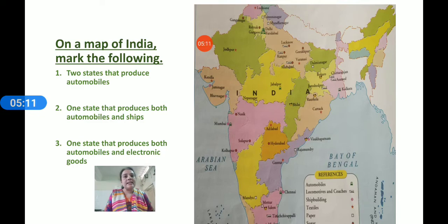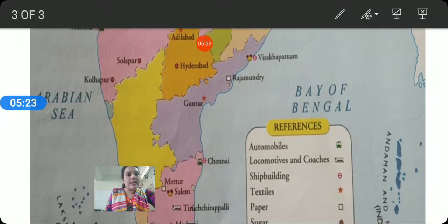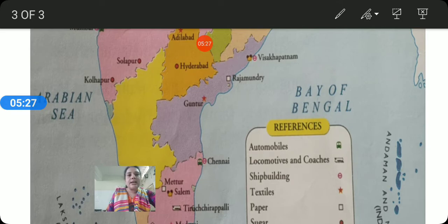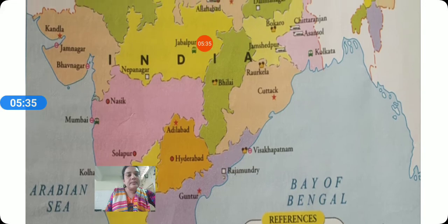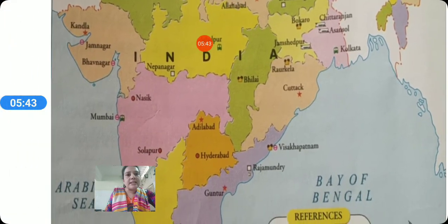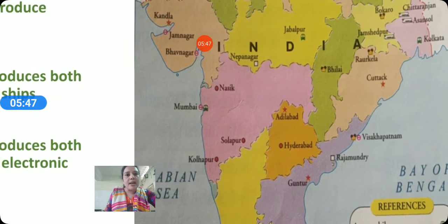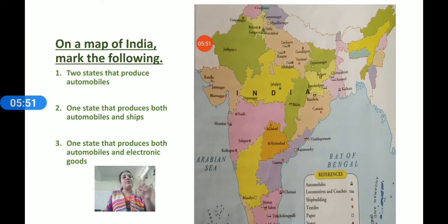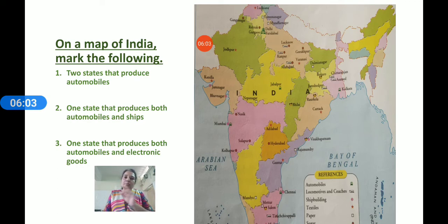Second, mark one state that produces both automobiles and ships. You can see both of these marks in Chennai, which is the state that produces both. You can also see it in Mumbai. You have to mark this in one state where both automobiles and shipbuilding occur, and write 'automobiles and shipbuilding' next to it.